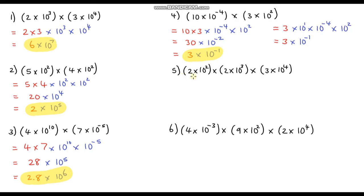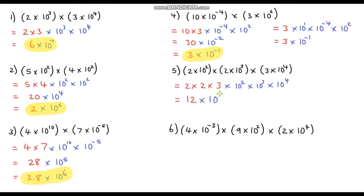Question 5 has quite a lot being multiplied together, but the process is the same. Grouping the single-digit numbers: 2 times 2 times 3 gives 12. Then adding the indices for the powers of 10: 2 plus 3 is 5, and 5 plus 4 is 9, so 10 to the power 9. We need to divide 12 by 10 to get 1.2 for the base, and multiply the power by 10 to get 10 to the power 10. Final answer: 1.2 times 10 to the power 10.